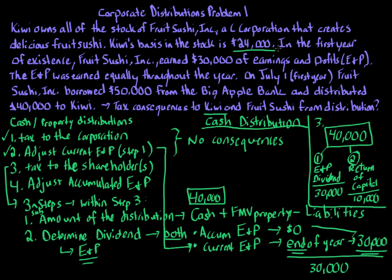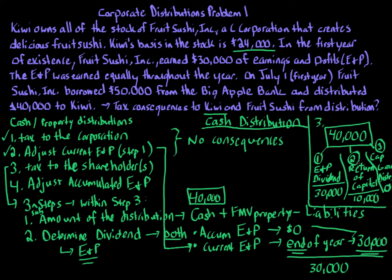What would happen if there wasn't enough basis? For example, if basis were only $6,000, then $30,000 plus $6,000 leaves $4,000 remaining. That $4,000 would go to stop three — capital gain distribution. Capital gain distribution is taxed like a capital gain: long-term if the stock is held more than a year, short-term if held a year or less. In this problem we have none, but all three levels will always add up to the full distribution amount. It will always work.